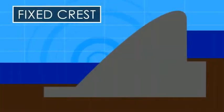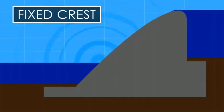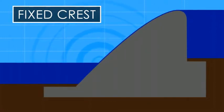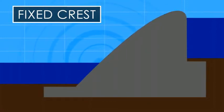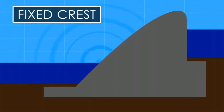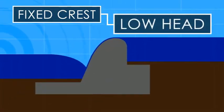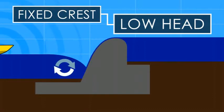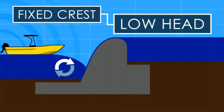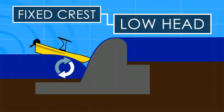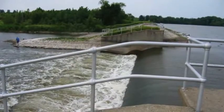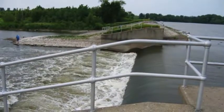A fixed crest dam is one that does not move. Water often flows over the top of the dam. This dam is basically a concrete wall across the river, which keeps the channel deep enough for navigation. A low head dam is a particularly dangerous type of fixed crest dam because the currents below the dam can trap a boat and pull it into the dam. These currents are extremely difficult to see from the upstream side.